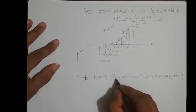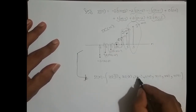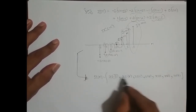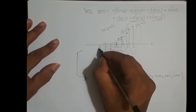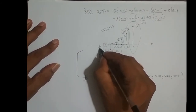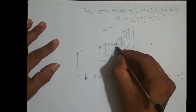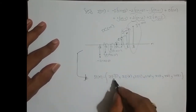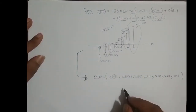Inside the bracket I have kept minus 3, minus 2, minus 1, 0, 1, 2, 3. These numbers are nothing but the value at that particular value of n — x(-3), x(-2), x(-1), x(0), x(1), x(2), x(3). These are the indices of the samples.